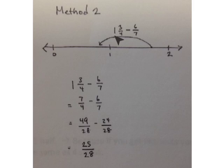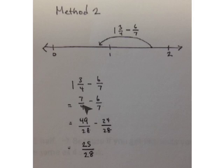A third way to solve 1 and 3 fourths take away 6 sevenths is to rename 1 and 3 fourths as an improper fraction. 1 is 4 fourths plus 3 more fourths is 7 fourths. We're taking away 6 sevenths. Our common unit is 28: multiply 7 fourths times 7 over 7, and 6 sevenths times 4 over 4, to get 49 28ths take away 24 28ths. Our answer again is 25 28ths.